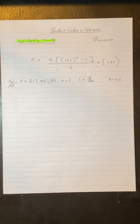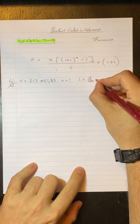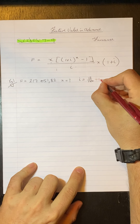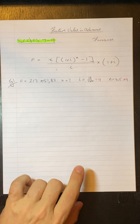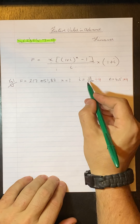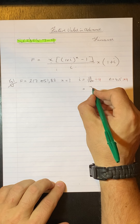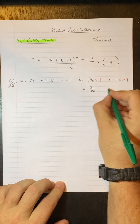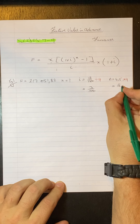They've told us it's compounded quarterly, so I need to divide the interest by 4 and multiply the time by 4. Working that out on the calculator, this gives us 3 over 100 for i and 18 for n.